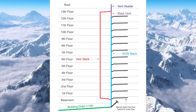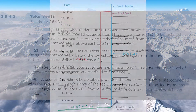If we look at this picture here, we're going to see a building with multiple stories. This building will require Yolk Vents. Let's look at some requirements to find out where they need to go and what they need to look like.